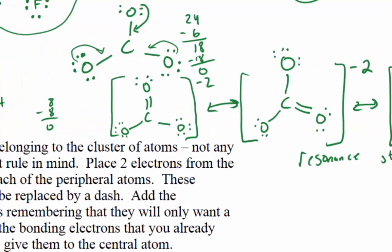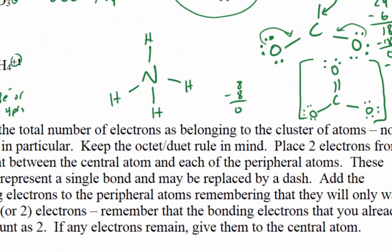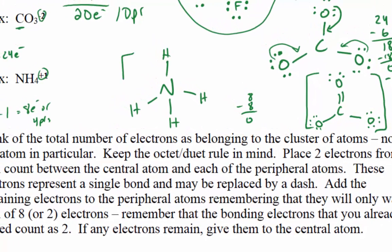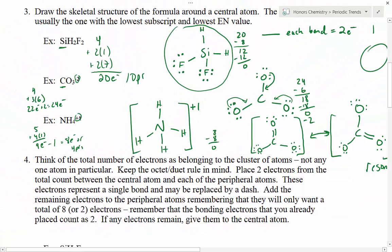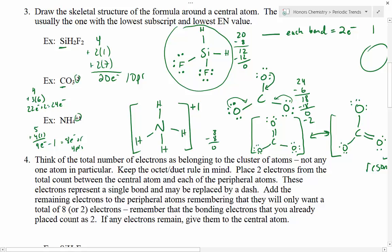Looking at NH4 positive — when I check the peripheral atoms, they're all happy. I check the central nitrogen: two, four, six, eight. I was out of electrons, so this is done. Don't forget, because this one has a charge, I'm going to throw a bracket around it and put plus 1 on there — and now it is done. If you have extra dots left over, put them on the central atom. If you need more bonds for the central atom, you're going to have to reach around to other atoms and double bond with them — move those electrons into a bond.